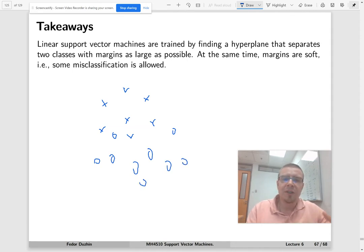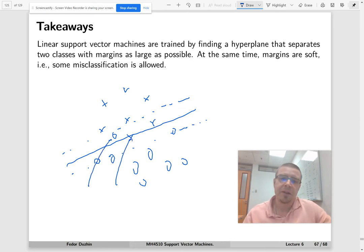We want to separate them by a hyperplane. So this is what it looks like. But sometimes it is impossible, which means we are going to allow some margins. Within the margins we allow misclassification. So in this case, this observation is misclassified and this observation is misclassified.